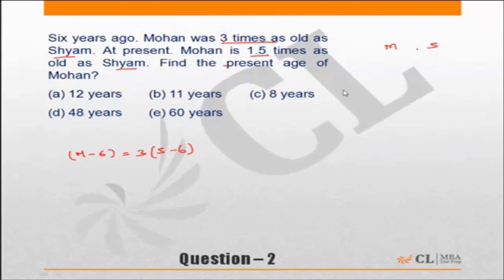At present Mohan is one and a half times as old as Shyam. So Mohan is actually three by two times Shyam. So you have got two equations, two variables, you can solve it. We need to find the age of Mohan, so we should replace Shyam. Shyam is equal to two by three of M. So put S equal to two by three of M and you will be able to solve the equation.